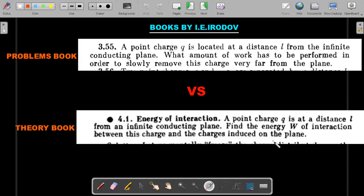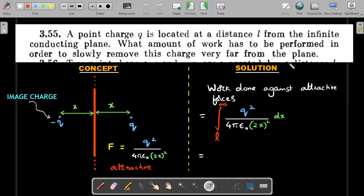We'll solve one by one. Starting with 3.55. The concept you should all know is the image charge concept, very important for physics. If this is the point charge and this is the conducting plane, we can imagine a charge at equal distance on the other side called image charge.